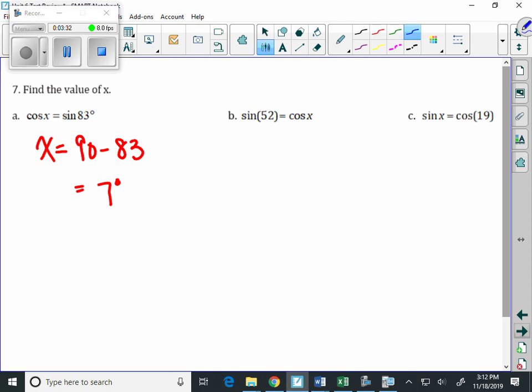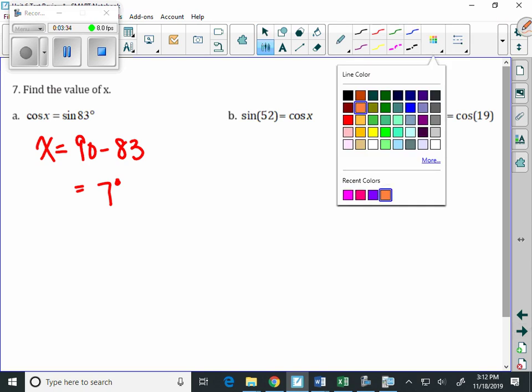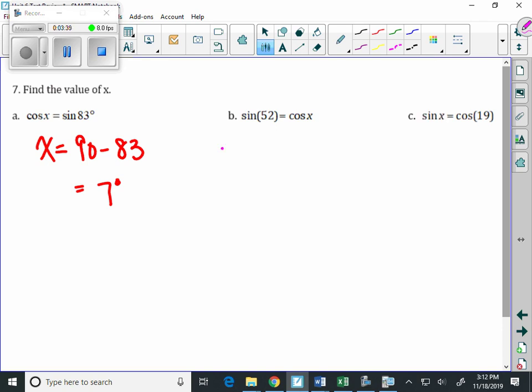For letter B, we know 52, so x is 90 minus 52, and 10 minus 2 is 8, and 8 minus 5 is 4. And the same idea over here on letter C. We know 19 degrees. We can take 90 and subtract 19, and we end up with 10 minus 9 is 1, 8 minus 1 is 71 degrees.